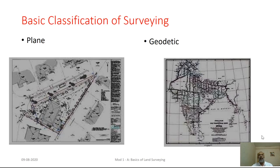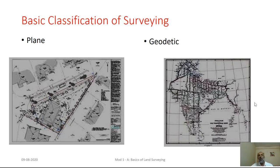Surveying can be basically classified into two types: plane survey and geodetic survey. Plane survey is related with a plan, whereas geodetic survey is related with a map. We will speak more about plane and geodetic surveys in the subsequent slides.